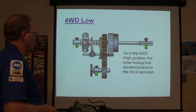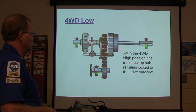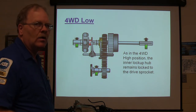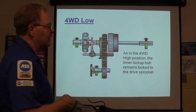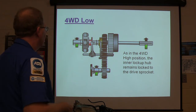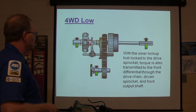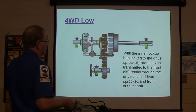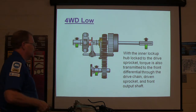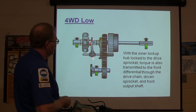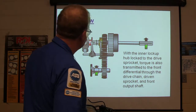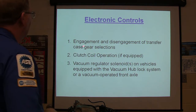In four-wheel high position, the inner lock-up hub remains locked to the drive sprocket. There's not really a two-wheel low — you've got four-wheel low, four-wheel high, neutral, and two-wheel high on these kinds. Torque is transmitted to the front differential through the drive sprocket and front output. This is just a bunch of words, but the visuals are what I'm showing here.